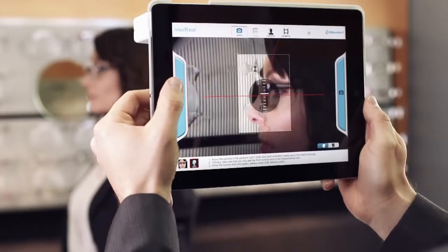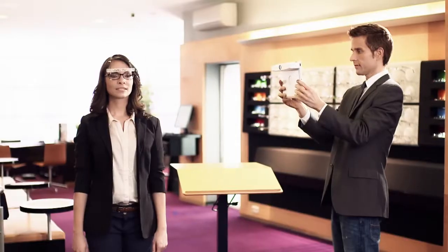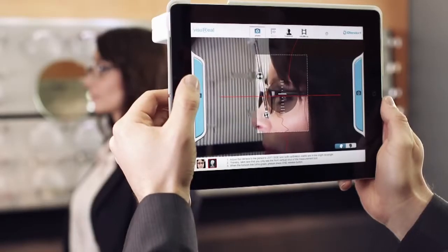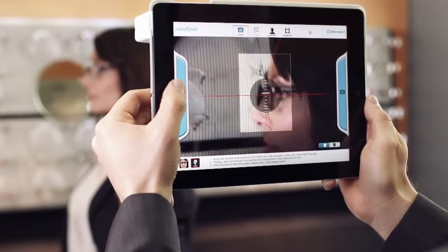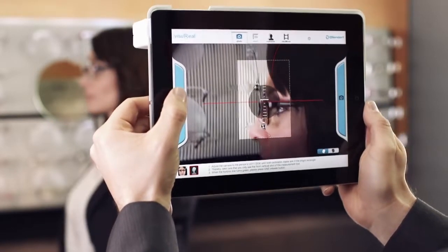Check the natural head and body posture of your patient again. Both calibration marks and the eye have to be in the bright rectangle. The horizon line has to be green.